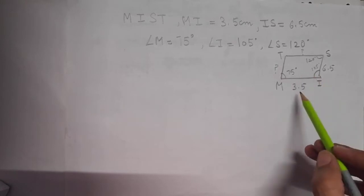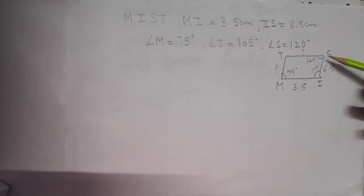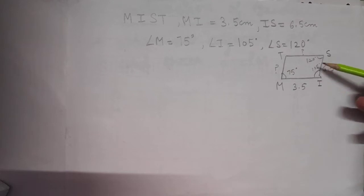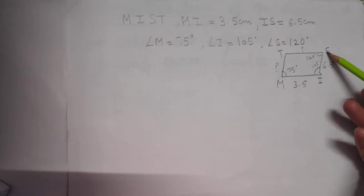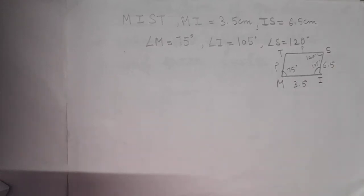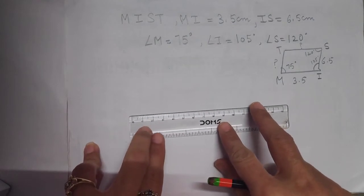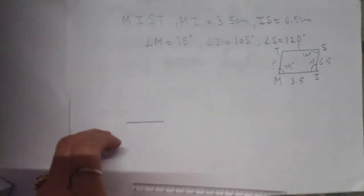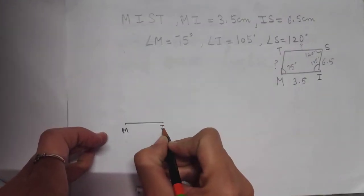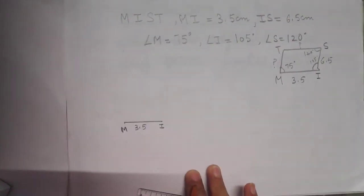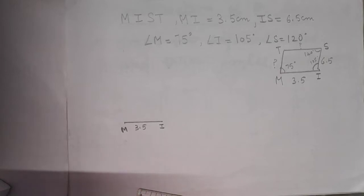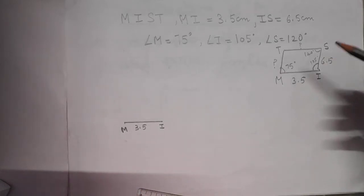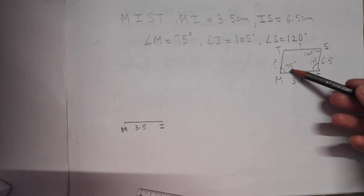Both angles at M and I are known and the measurement of MI is also known. You can also take IS as base since that measurement and its two adjacent angles are also known. Either MI or IS can be taken as base. I am taking MI as base, so MI = 3.5 cm. I will be drawing 3.5 cm now with the help of a scale. This is MI equal to 3.5 cm. After that I need to make an angle of 105° at I and 75° at M.